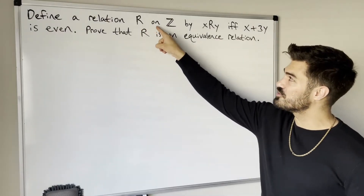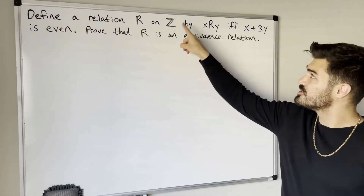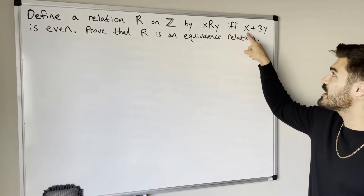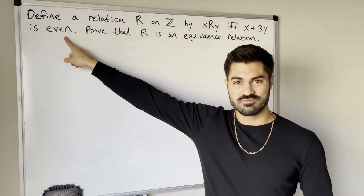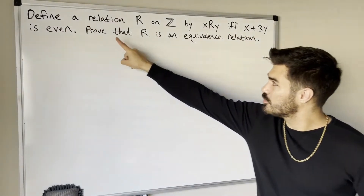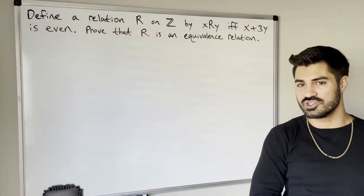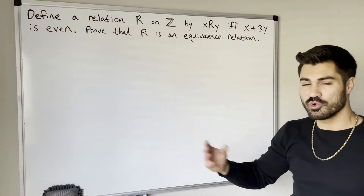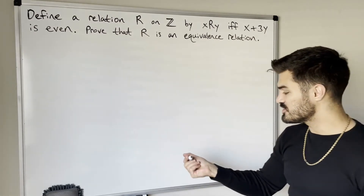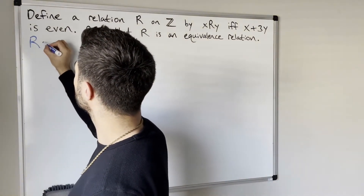Here's our example: we have a relation defined on the set of integers by x is related to y if and only if x plus 3y is even. We want to prove that this relation is an equivalence relation, so we need to prove it is reflexive, symmetric, and transitive.